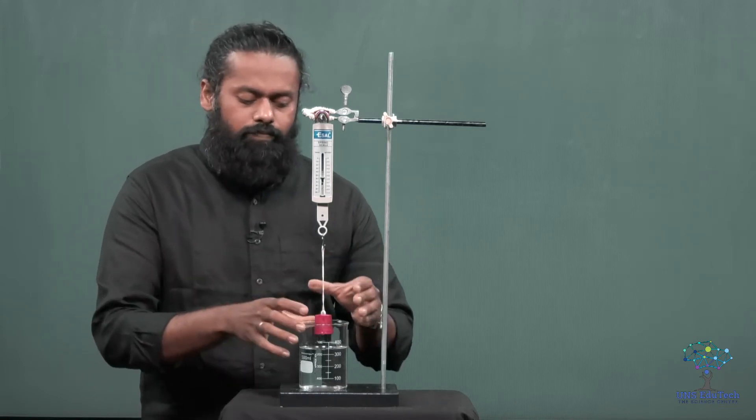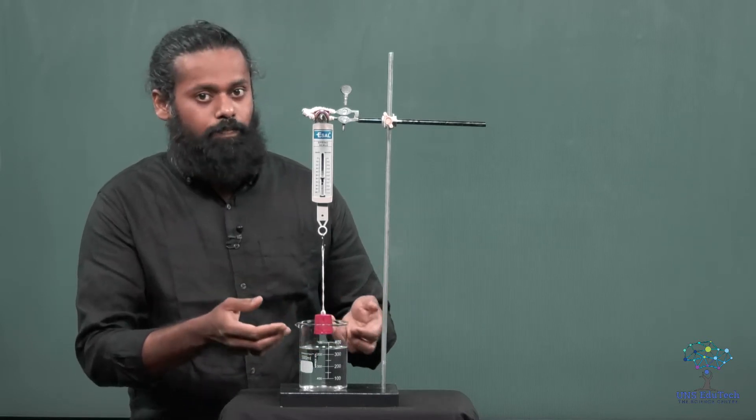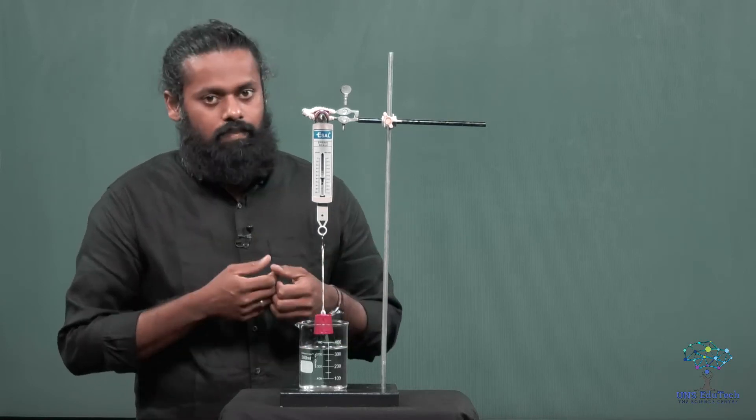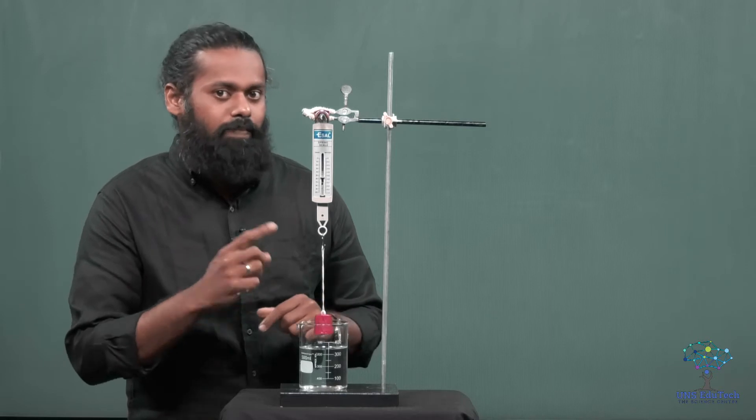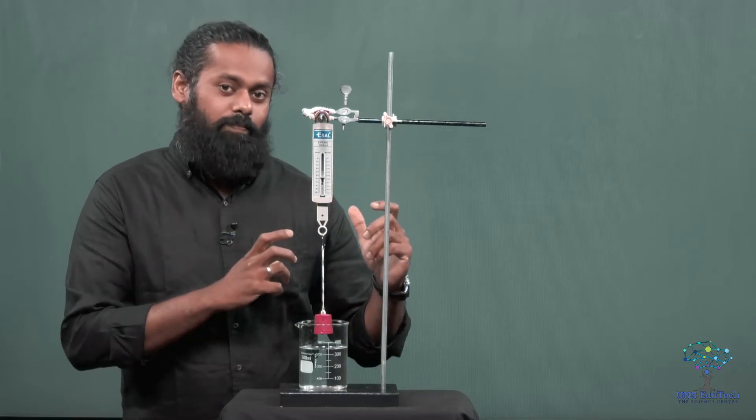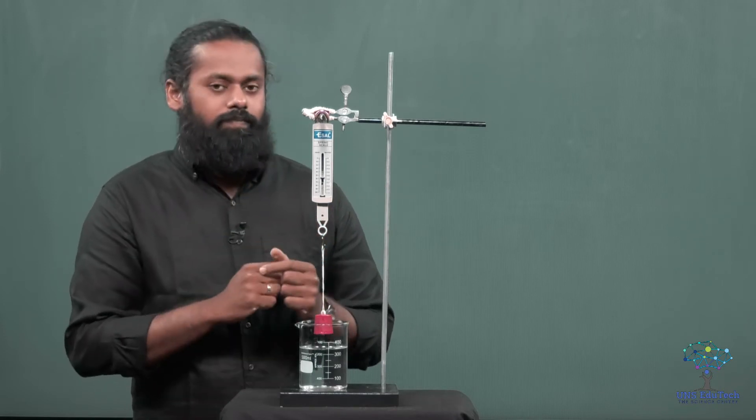So here, when you are dipping this mass, you can see there is a displacement. The volume is increasing in the beaker, or the level is rising in the beaker. So here, weight reduction has some connection with that increase in volume.